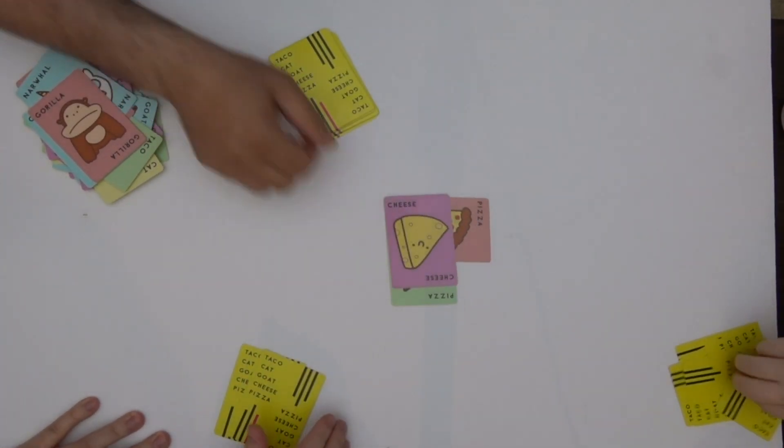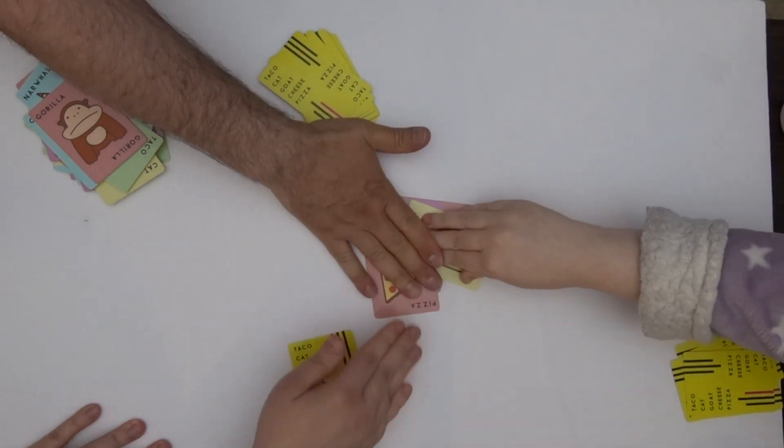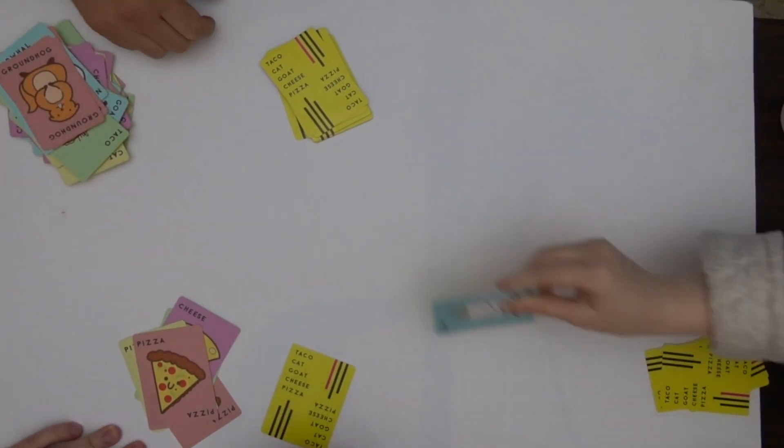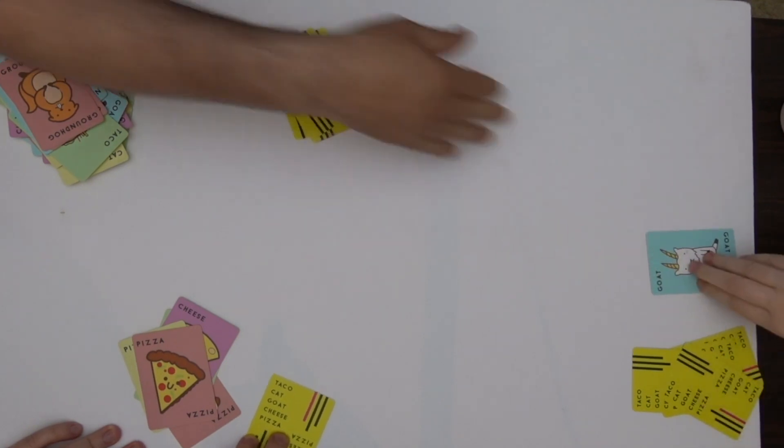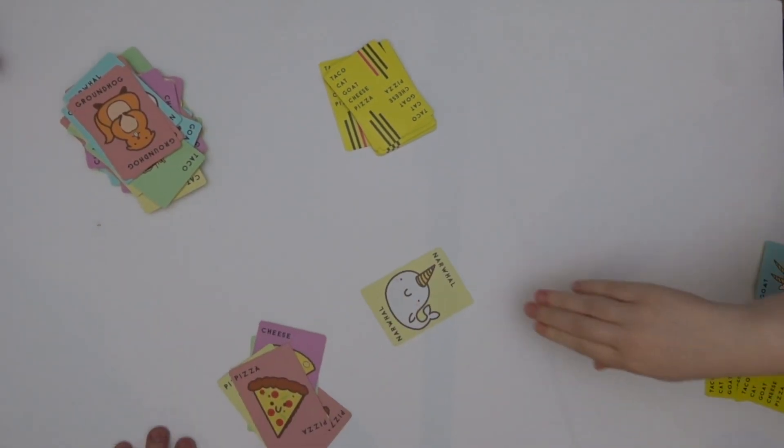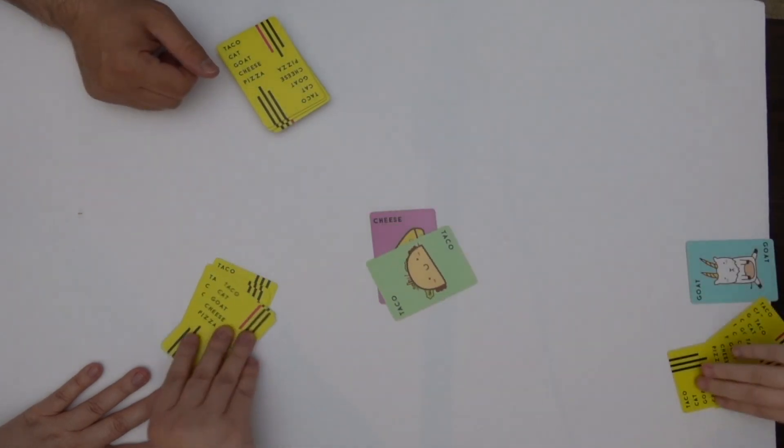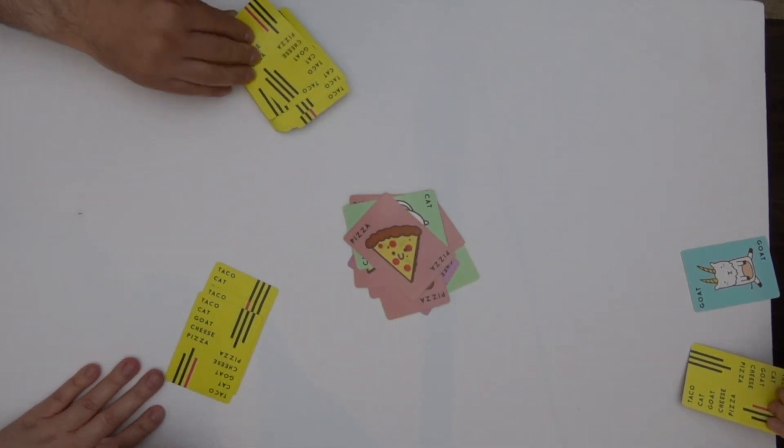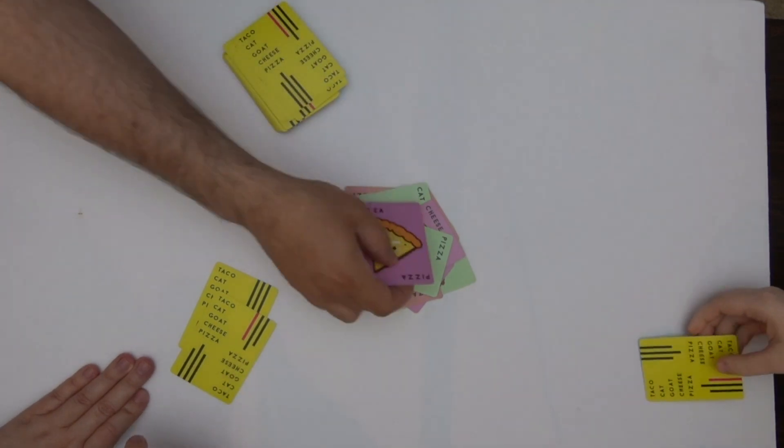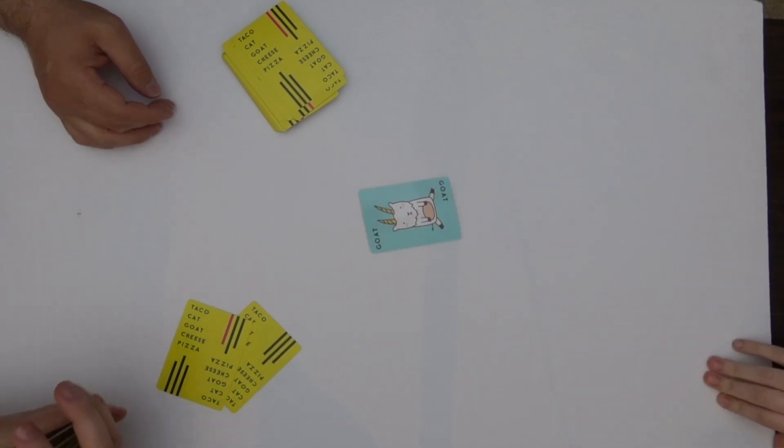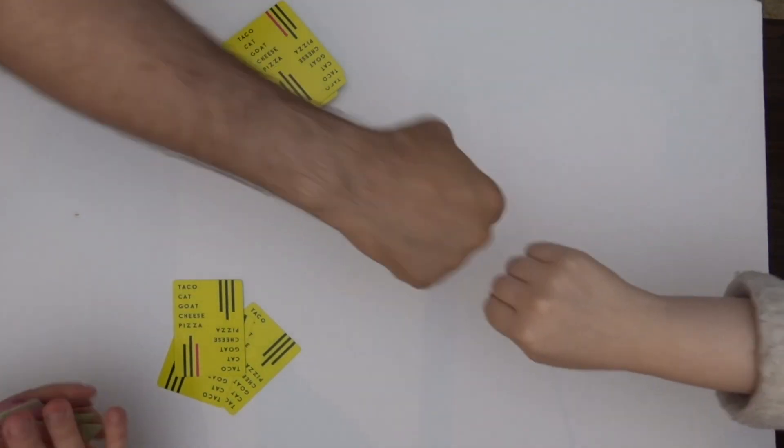Got these long arms, I can't do these things. This table's gonna explode. Taco, cat. Cat, goat, cheese, pizza. Taco, cat, goat, cheese, pizza, taco. Cat, goat, cheese, pizza. Oh it's almost Bagel time, and it was your turn.